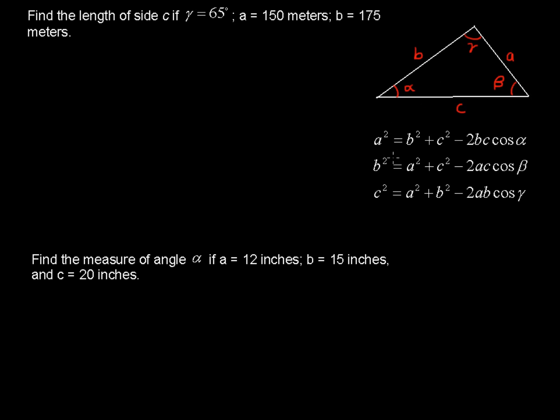We also have the law of cosines. And notice here that you've got a squared, the side squared, equals b squared plus c squared minus 2bc times cosine of the opposite angle. And that's how all of these work here. A is opposite angle alpha, side b is opposite angle beta, and side c is opposite angle gamma.